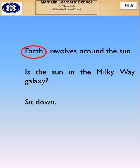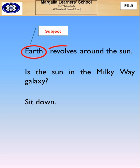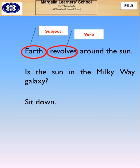Let us see some examples. 'Earth revolves around the sun.' Earth is the subject and revolves is the verb. These two things are completing the sentence. This is a statement.